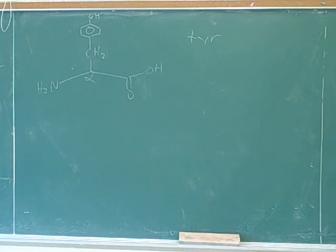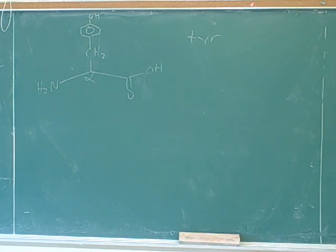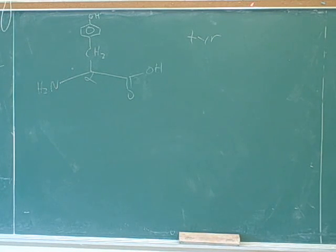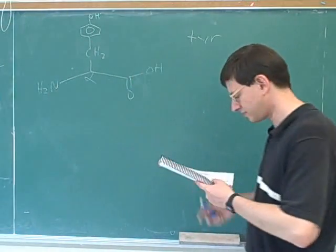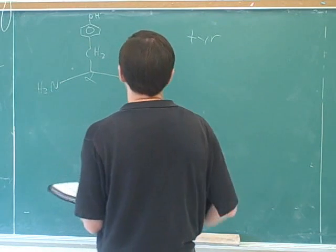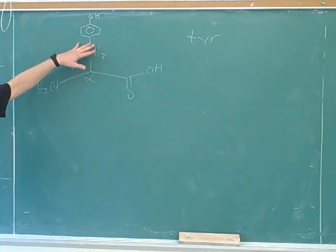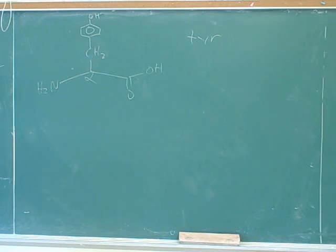What type of side chain does valine have — acidic, basic, or neither? Neither. Good. What type of side chain does glutamic acid have? Glutamic acid is acidic — you can tell that from the name. What type of side chain does histidine have? Histidine would be basic, because it's got the tiny little c. What type of side chain does tyrosine have? Tyrosine is acidic.